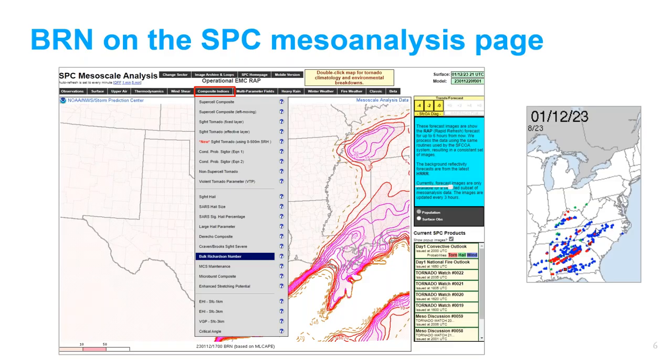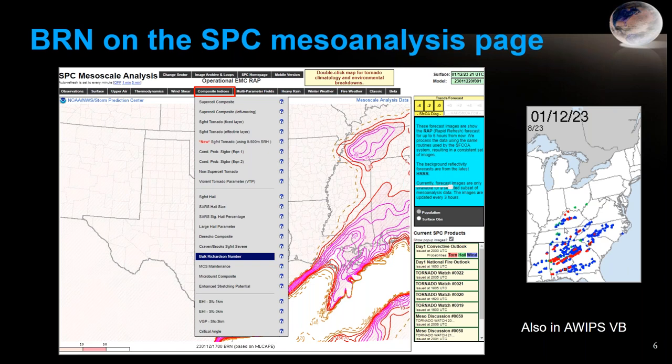As Jeff mentioned, the bulk Richardson number has been available on the SPC Mesoanalysis page for quite some time — it's under the composite indices. It uses mean layer CAPE for the buoyancy part of the equation, and there's a help function available. Here's an event from January with several tornadoes in the southeastern U.S., and you can see the bulk Richardson number is in the range of 10 to 50 in the area where tornadoes occurred. It's also available in the AWIPS volume browser.